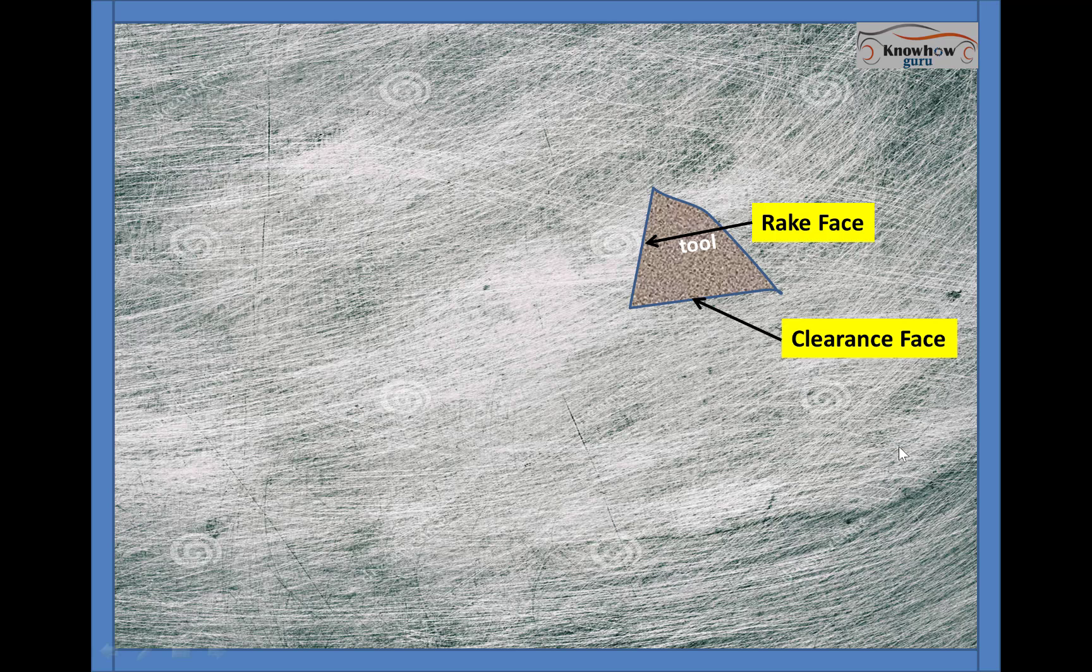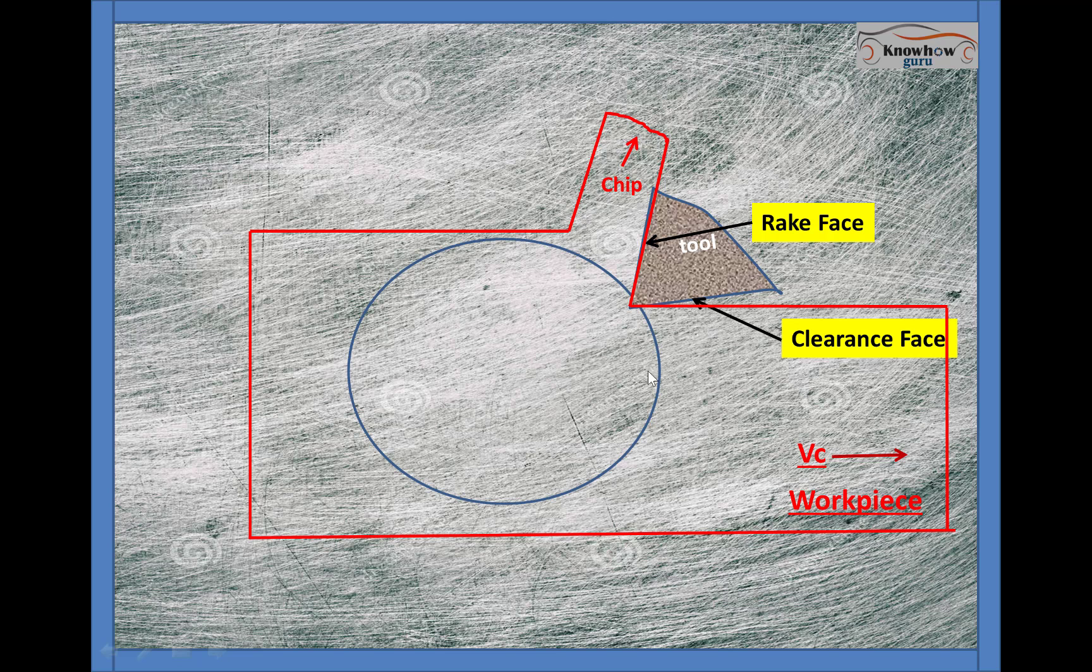First of all, we'll see the terminology about the cutting tool and the workpiece. This is the cutting tool, or tip of the tool. This is the rake face and this is the clearance face. On the rake face, the chip is flowing upward in this direction. Cutting velocity is in this direction. Now I'm going to draw a Merchant's Circle.